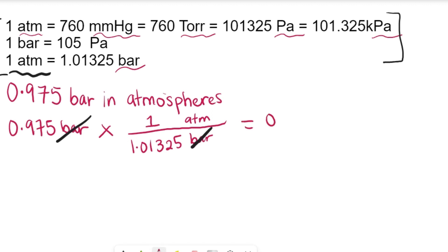When we do that, we're going to input that in the calculator and we're going to end up getting 0.962250 atmospheres. We have our question in three sig figs, so we're going to find the answer in three sig figs.